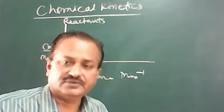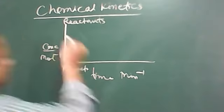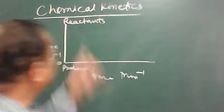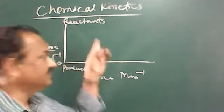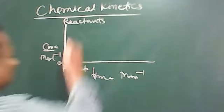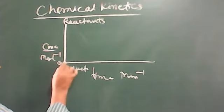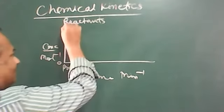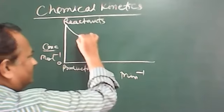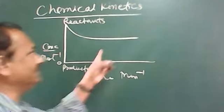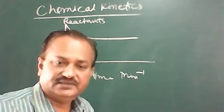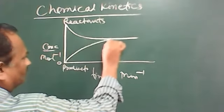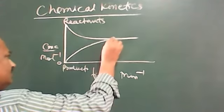This is the concept of rate of reaction from class 11. At the start of a reaction, the amount of reactants will be maximum, and the amount of product will be minimum or zero. As the reaction proceeds, the amount of reactants slowly decreases, and the amount of products slowly increases.